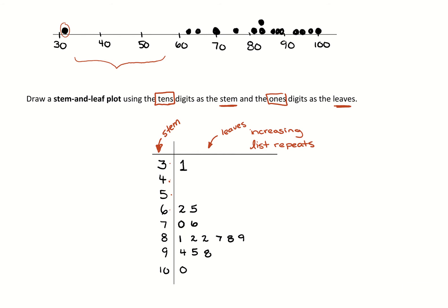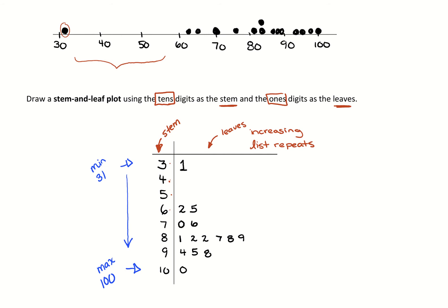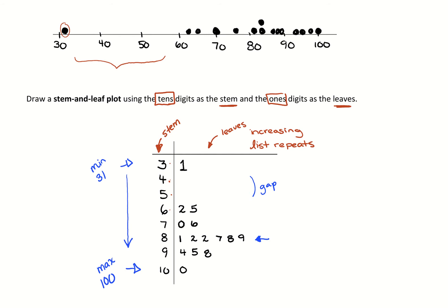Reading a stem and leaf plot gives you an idea of your different values and how they're organized. At the top of the stem and leaf plot is your minimum value — your smallest number, which is 31. As you read down, values increase, so the bottom holds the maximum value of 100. You can also get an idea of frequency — where are a lot of values clustering. So even though it doesn't look like a graph, it is describing the numerical data graphically.